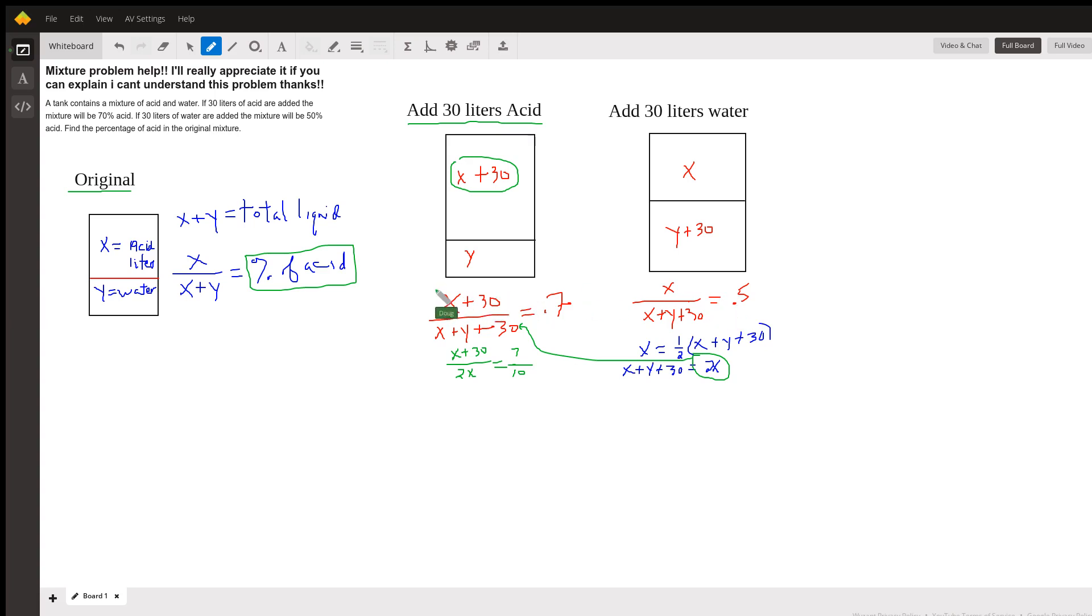Now, at this point, two unknowns, we should be able to use the substitution method. We could simplify all this and put the equation in the form ax plus by equals c and use the elimination method, but I see a quicker way. I see x plus y plus 30 in both equations.